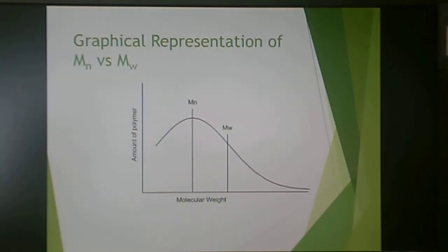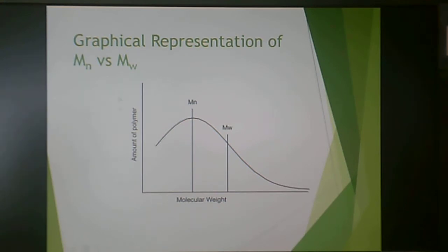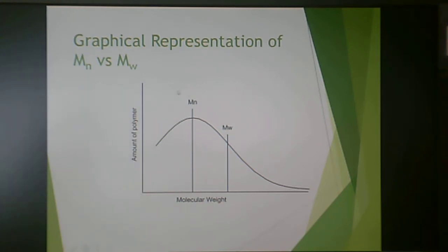Here is a graphical representation of M sub N versus M sub W. The y-axis shows the amount of polymer and the x-axis shows molecular weight. The take-home message is that M sub W is larger than M sub N almost always.